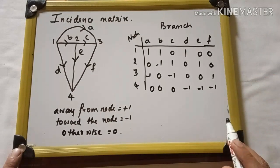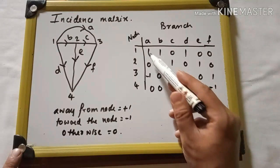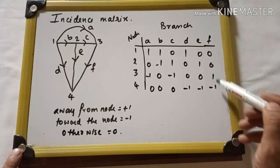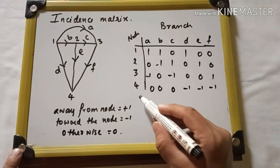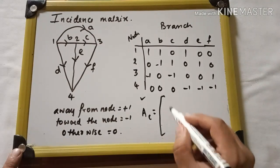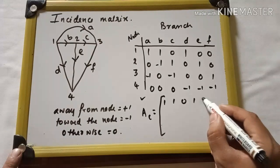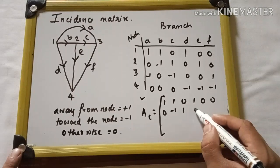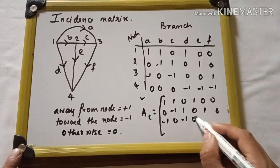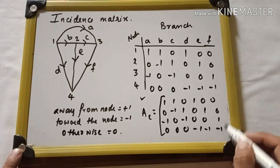To check if the answer is right, each column should sum to 0. Every column gives the pattern 1, minus 1, which confirms the answer is correct. The complete incidence matrix is written as: row 1: 1, 1, 0, 1, 0, 0; row 2: minus 1, 1, 0, 1; row 3: minus 1, 1, 0; row 4: minus 1, minus 1, minus 1. This is the complete incidence matrix.